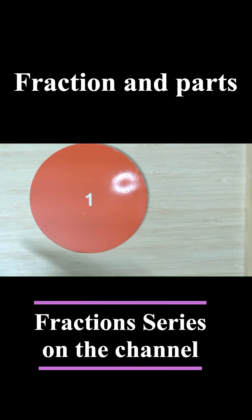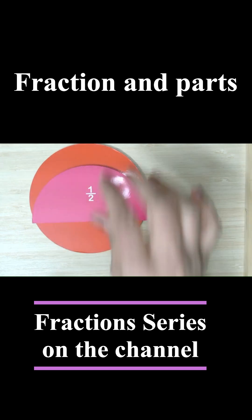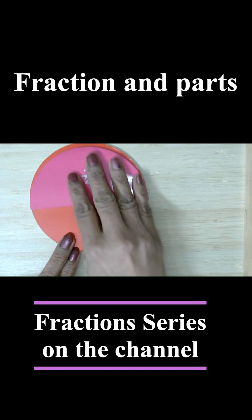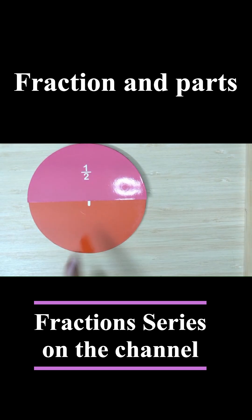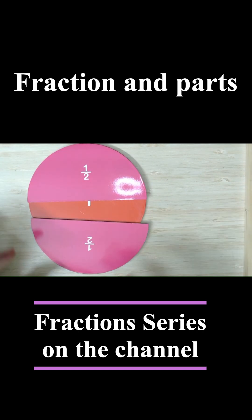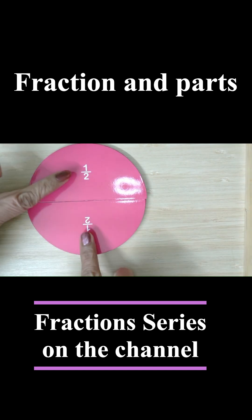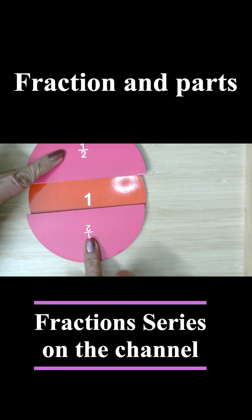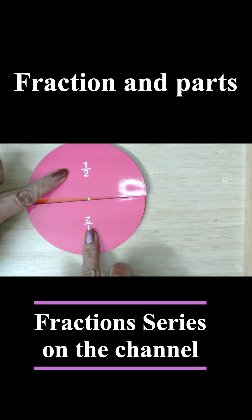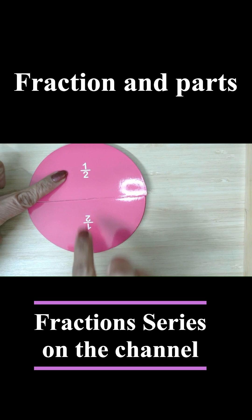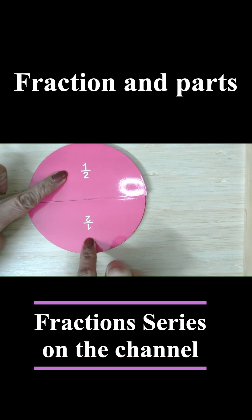This is a pizza — one whole. We want to divide it into two equal parts. This is one half, because this is one part out of two parts in which the one whole pizza was divided. So how many one-halves are there in one whole? There are two one-halves.